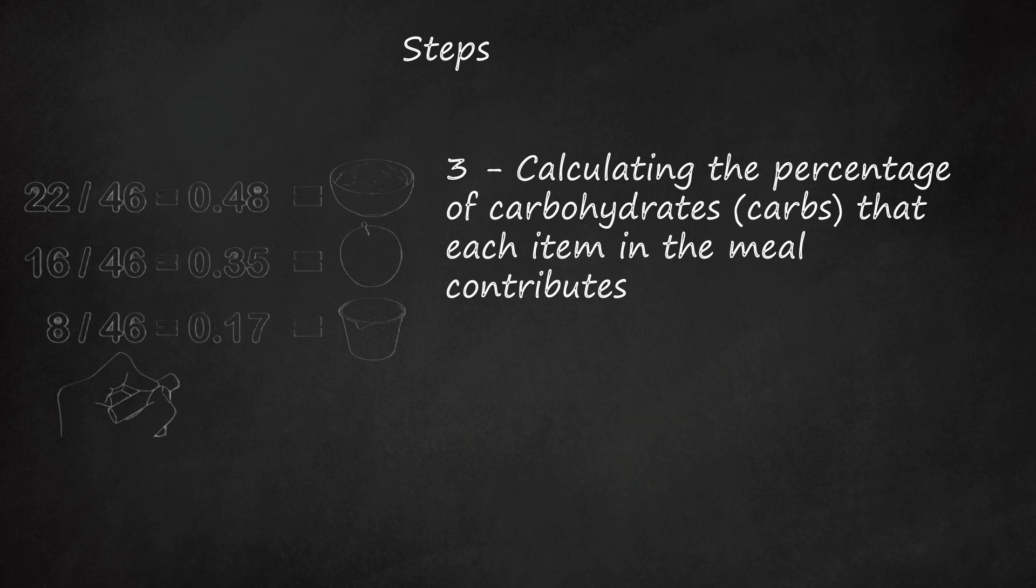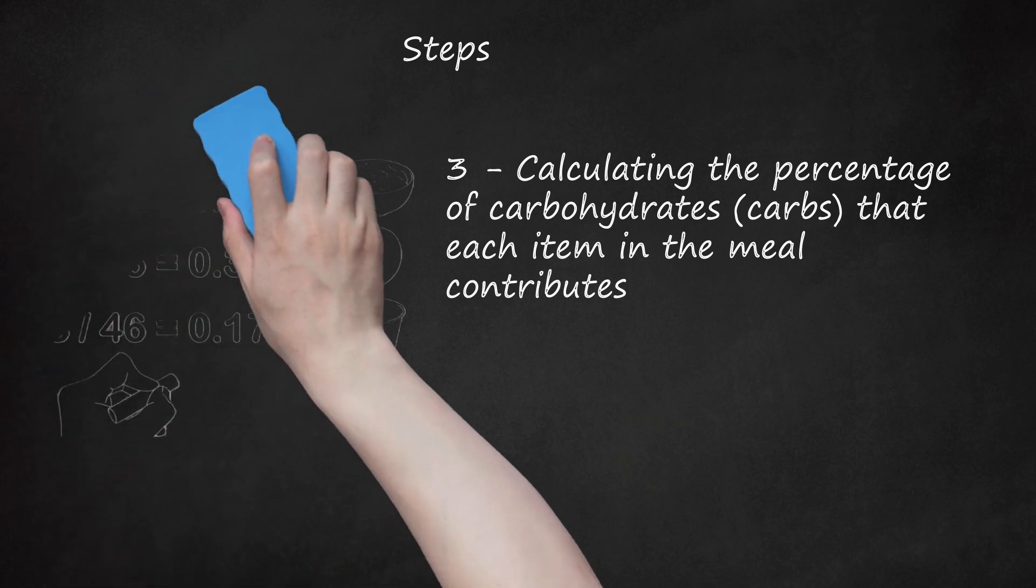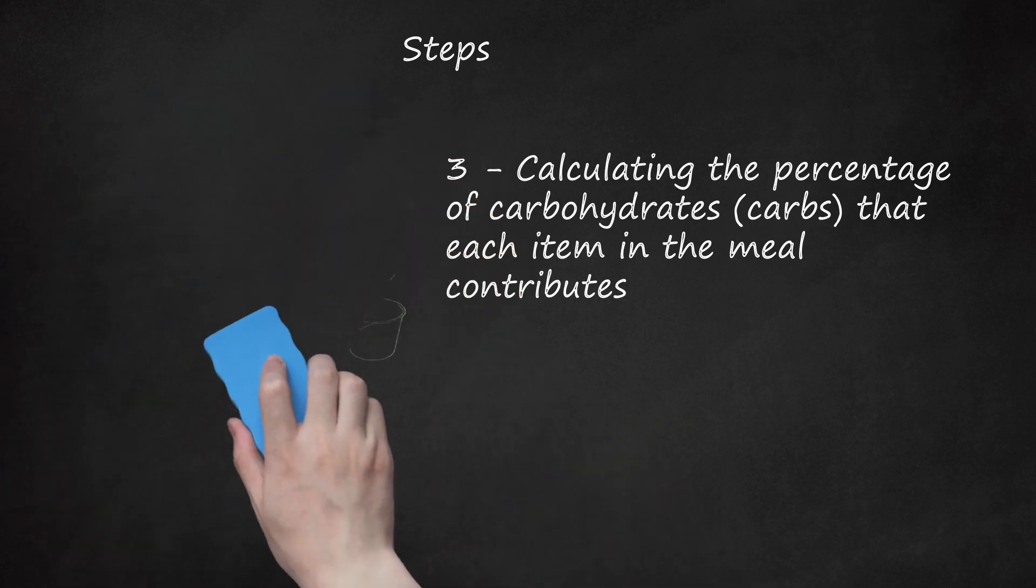Then do the same thing with the rest of the items. Oatmeal: 22 divided by 46 equals 0.48. Apple: 16 divided by 46 equals 0.35. Yogurt: 8 divided by 46 equals 0.17.